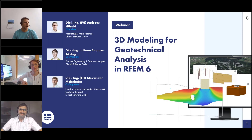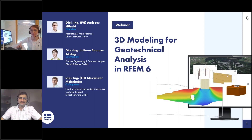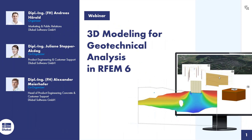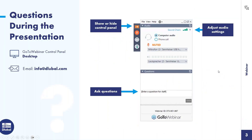Thank you for your introduction. We can switch off our webcams so that the attendees can see the first screen. You can see on the right side of your screen a control panel. You can show or hide it with the arrow, and then enter a question there and Alexander and I will answer you. If you don't get an answer during the webinar because there are too many, you will get an email afterwards.